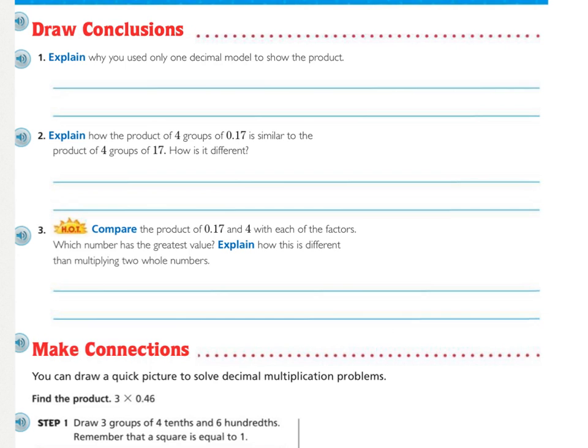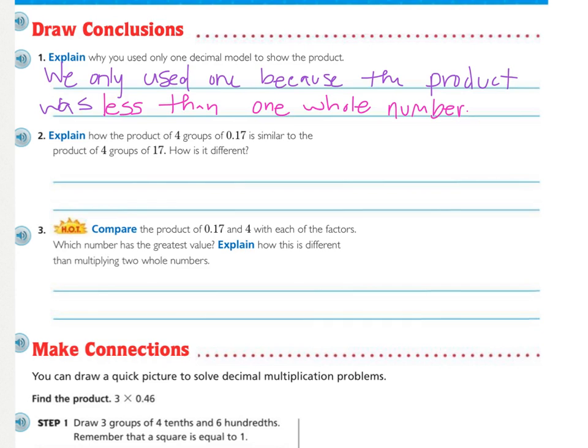Drawing conclusions, number one, explain why you use only one decimal model to show the product. Why did we only have to use one whole square? We only used one because the product was less than one whole number. If the answer had been one or more, we would have needed to use two or more models.